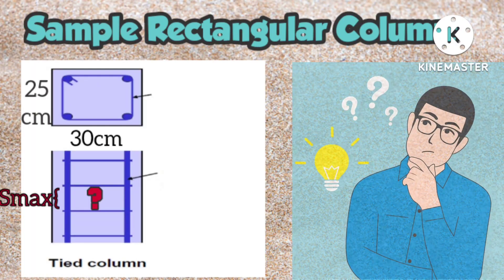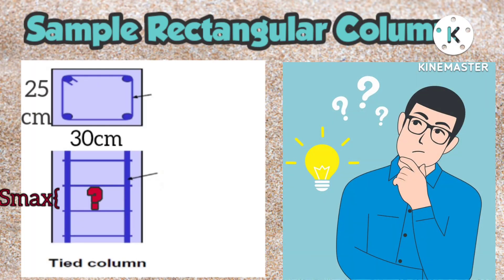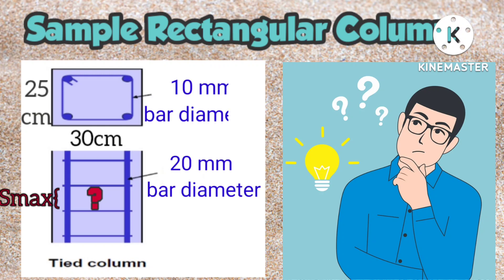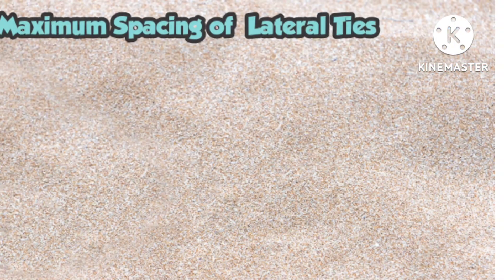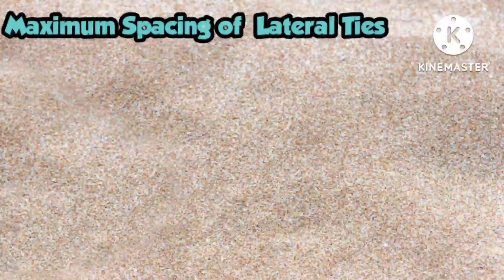Now assuming we have a rectangular column as shown in the figure, the short dimension of the column is 25cm and the long dimension is 30cm. The main reinforcing bar diameter is 20mm and the lateral ties is 10mm bar diameter. What will be the maximum spacing of lateral ties for this column using the rules from ACI code?